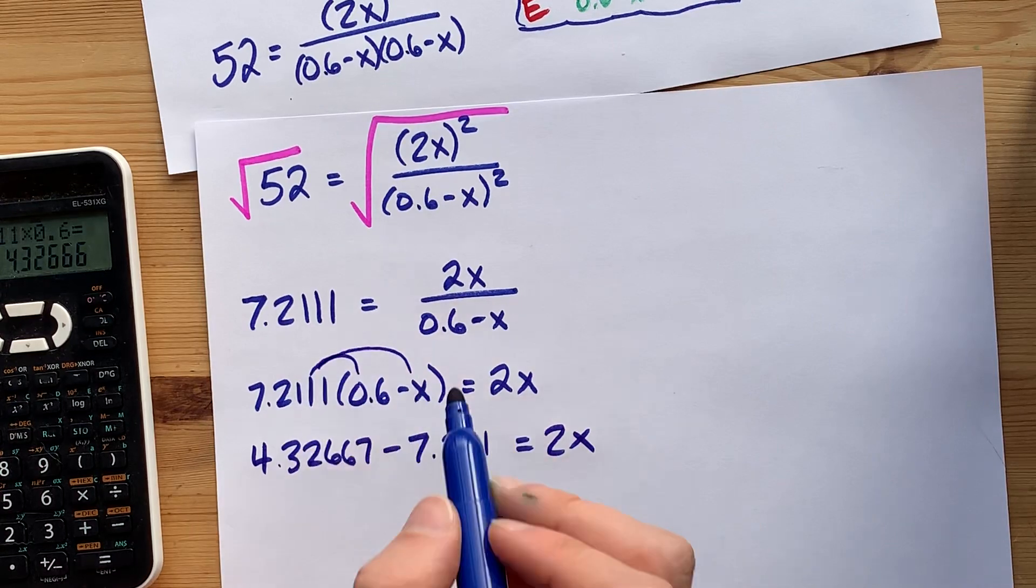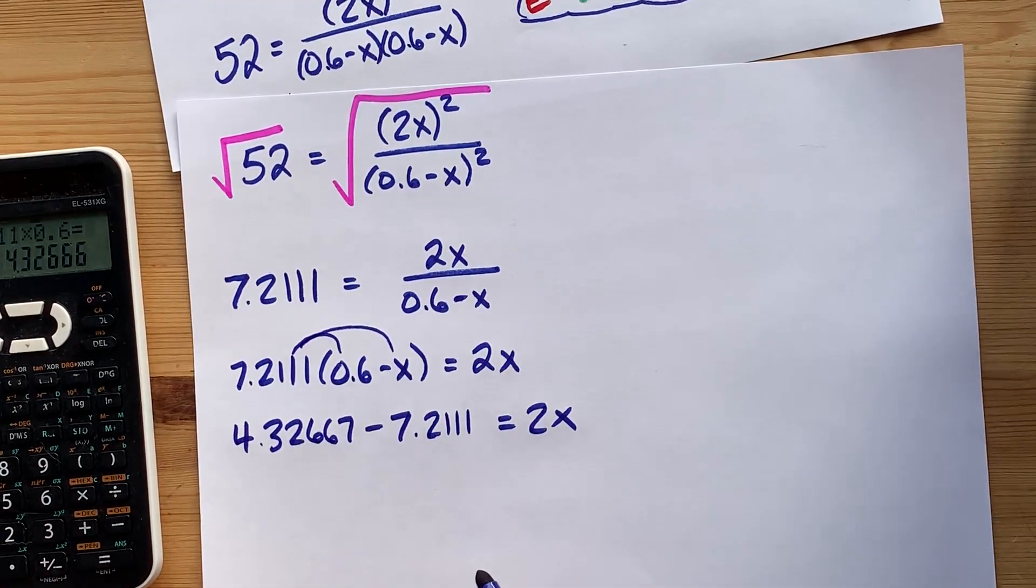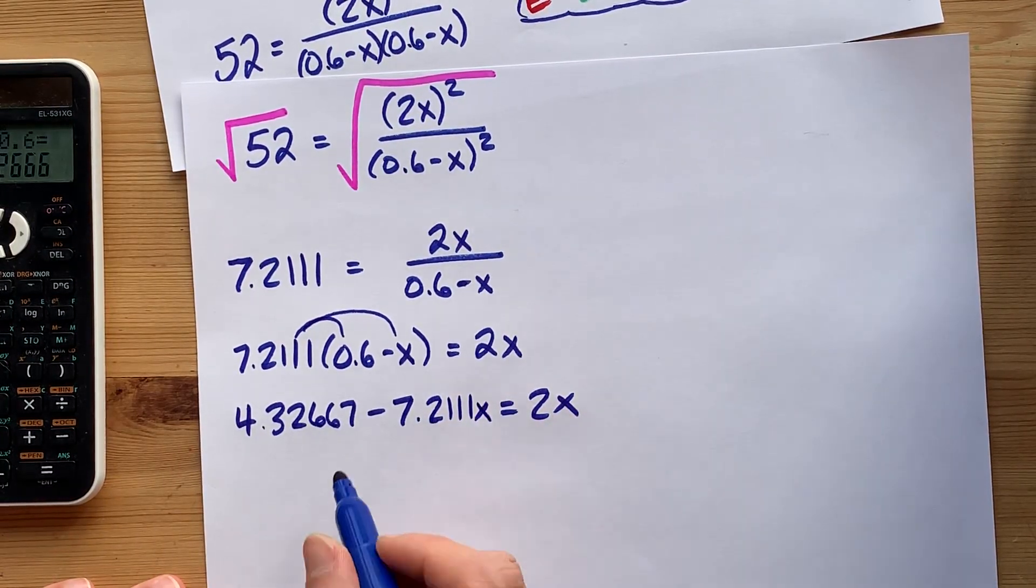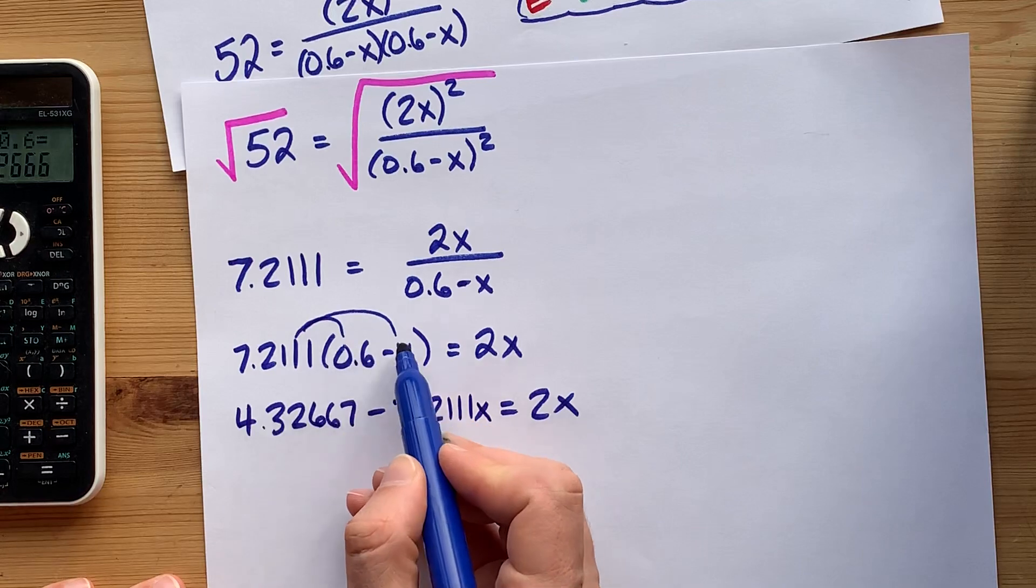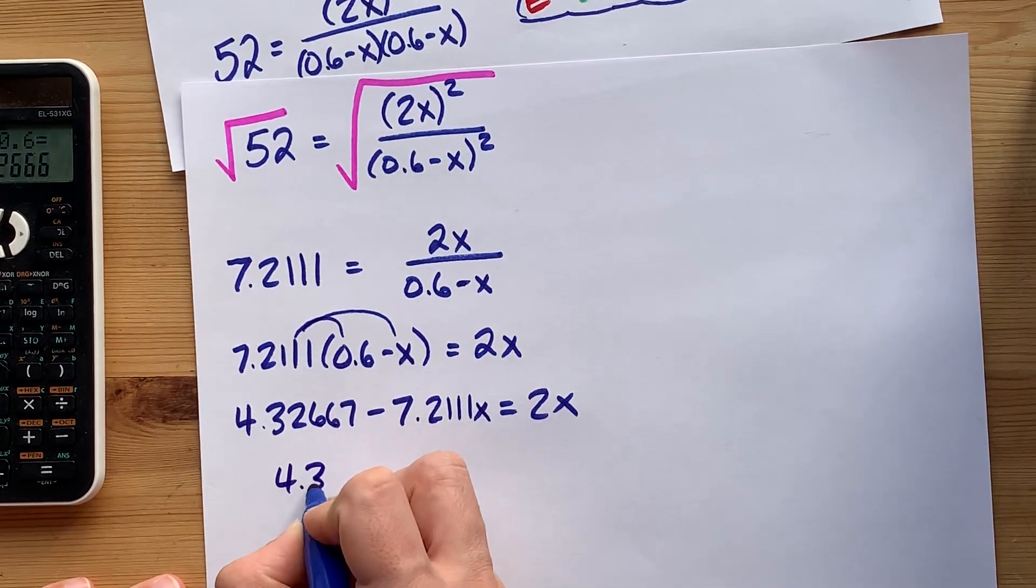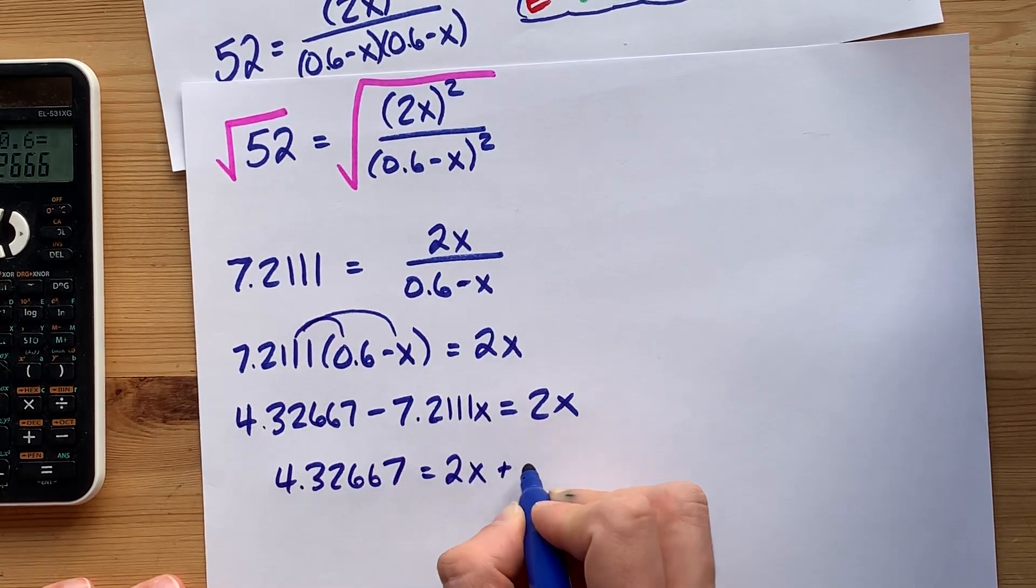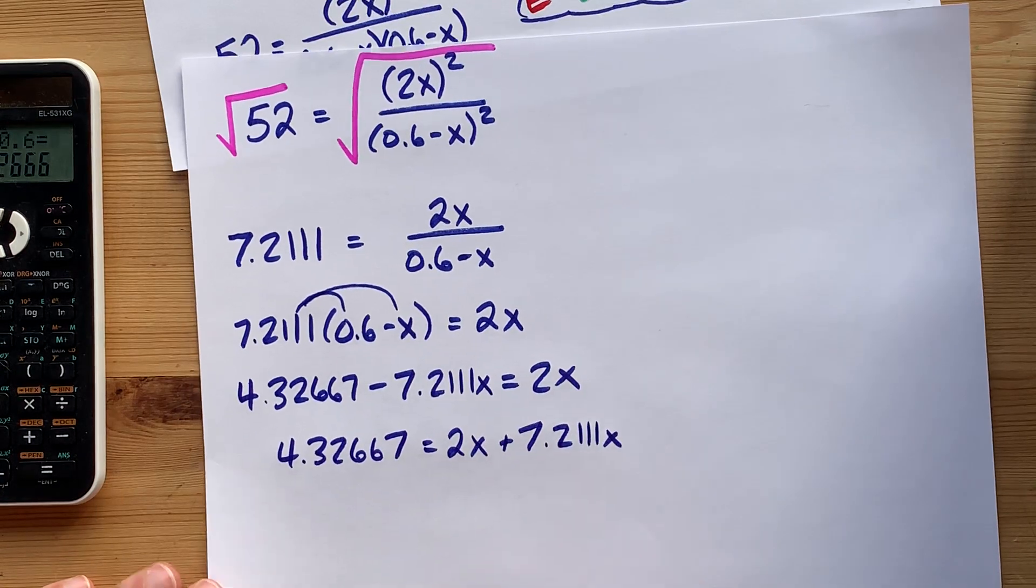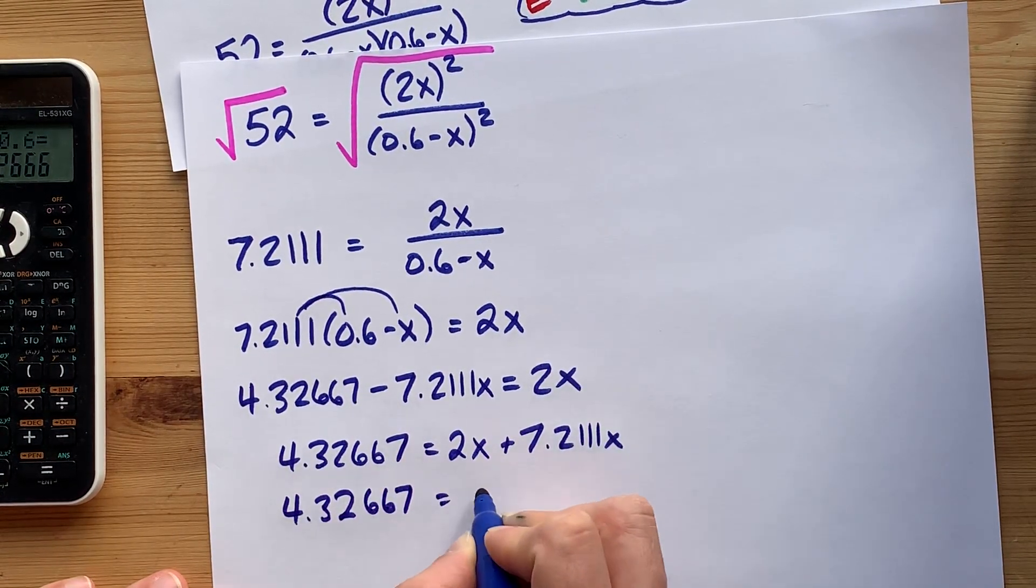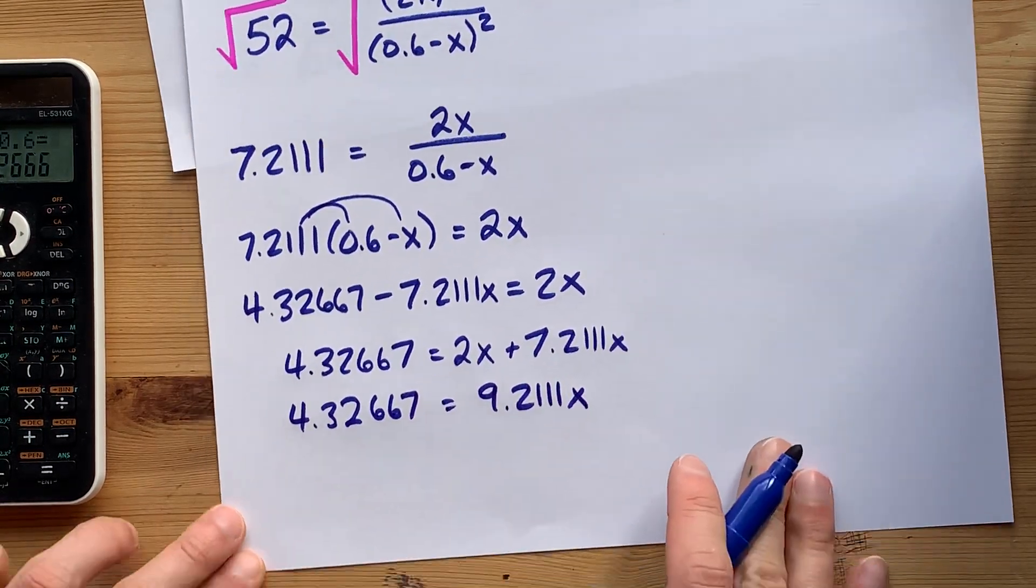That was just regular distribution taught in grade 9 in Ontario. But hey, I don't know where you go to school. Oh, I lost my X here. 7.2111 times X. I can now move this to the other side. That's 4.32667 equals 2X plus 7.2111X. That gives me 9.2111X. When I add the two together, you can divide.